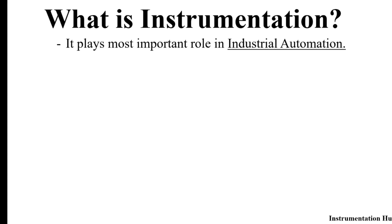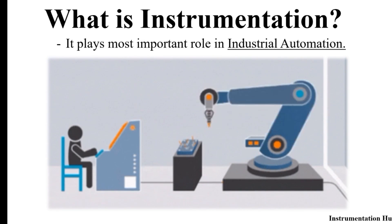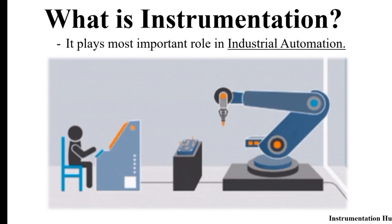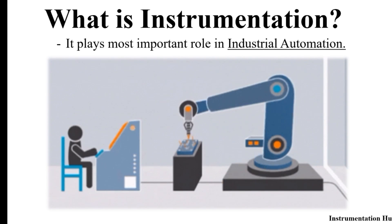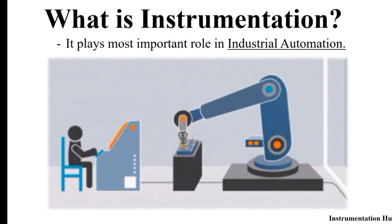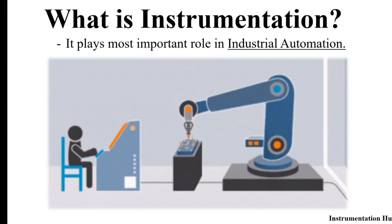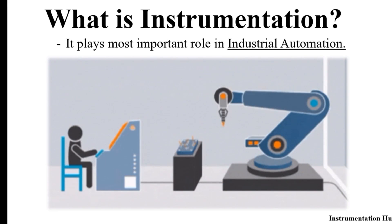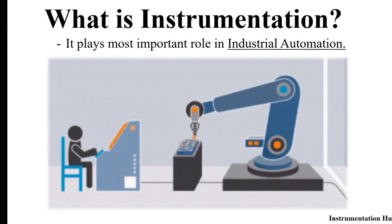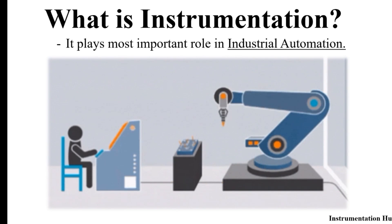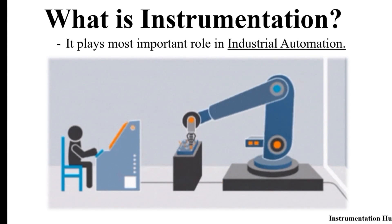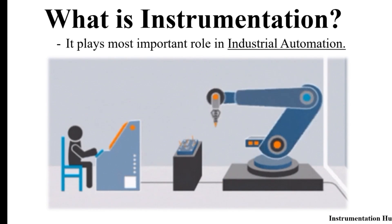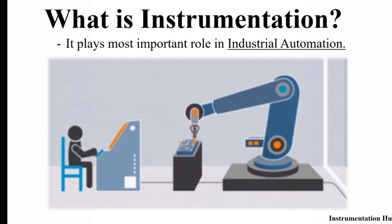Now I will tell you what are the different applications and how instrumentation is used in industries. You can see on the screen a simple industrial robotic arm, which is designed to do a specific task and is controlled remotely by a person sending information. Behind this system, instrumentation components are used — like controllers, sensors, communication devices, and controlling devices. We are going to see all these terms in detail in further videos.